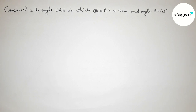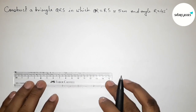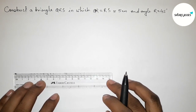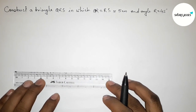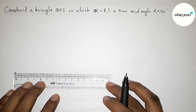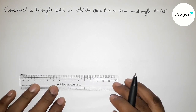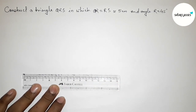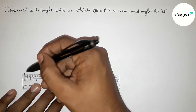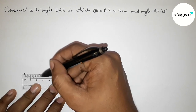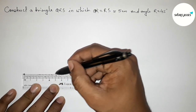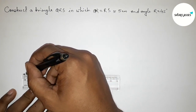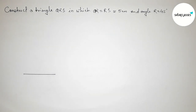First of all, let us choose any one side. Here I am going to take RS equals 5 centimeters — you can choose QR also, but here I am taking RS first. So drawing line segment RS equals 5 centimeters. This is 5 centimeters.